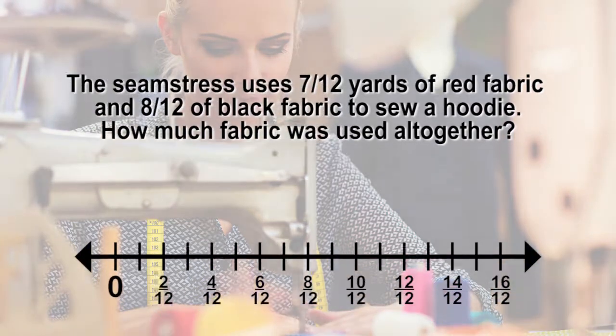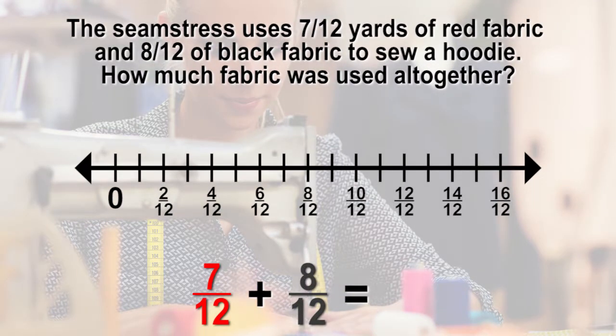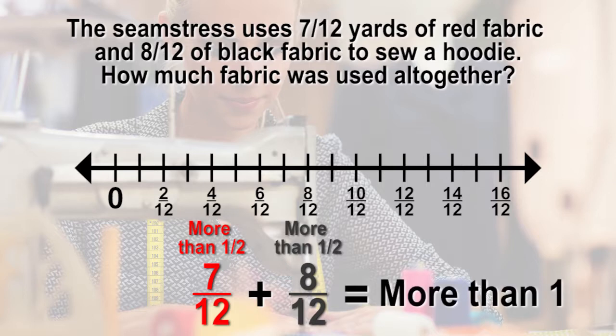To estimate, we know that 6 twelfths is 1 half. So the 7 twelfths red is just over 1 half. The black fabric is 8 twelfths, which is also a little over a half of a yard. So we know that we have 2 pieces of fabric, both over 1 half of a yard, so the exact amount will be more than 1 yard.